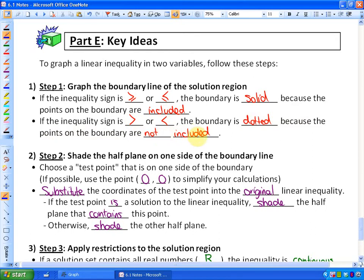Step two. So once you have the boundary line, step two is to shade the half plane on one side of the boundary line. The easiest way to do that is this: choose a test point that is on one side of the boundary. If possible, use the point (0,0) to simplify your calculations. Then substitute the coordinates of that test point into, and here's the important thing, the original linear inequality. If the test point is a solution, shade the half plane that contains this point. Otherwise, shade the other half plane.